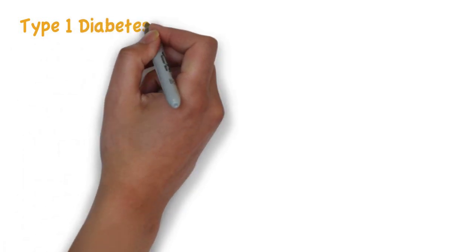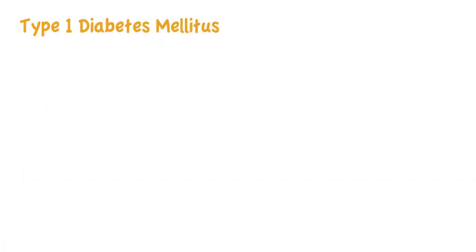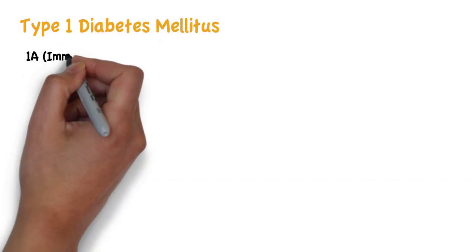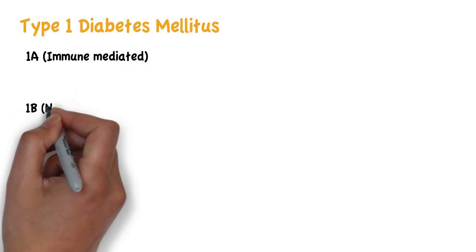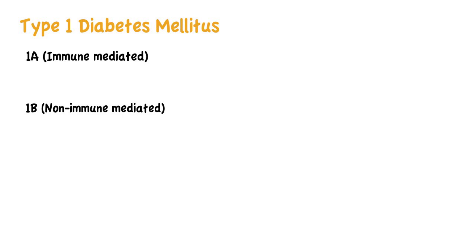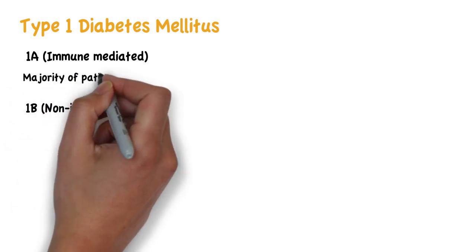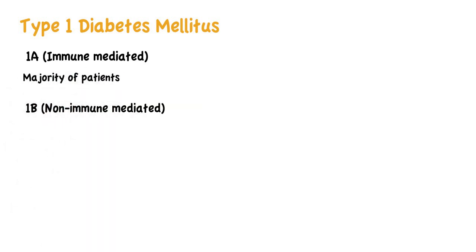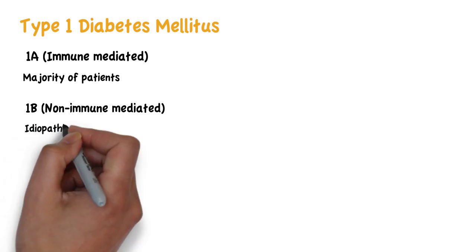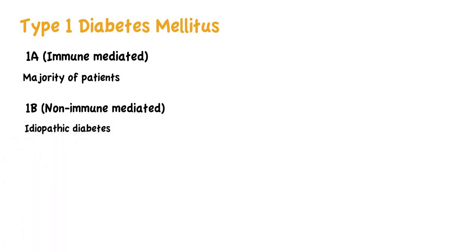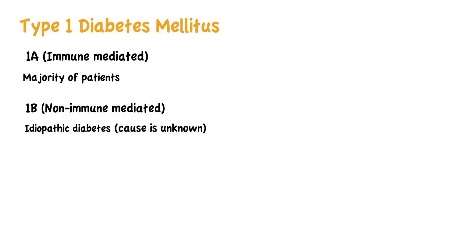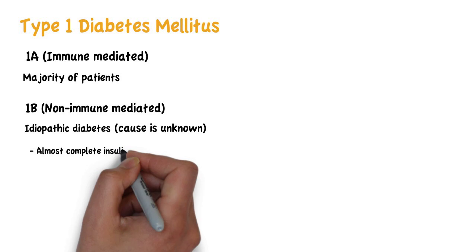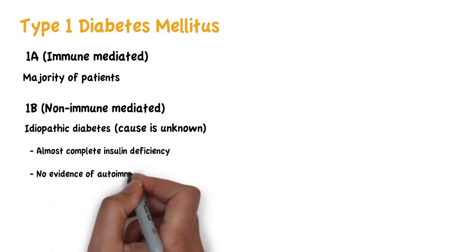Type 1 diabetes mellitus may be divided into type 1a, which is immune-mediated, and type 1b, which is non-immune mediated. The majority of patients with type 1 diabetes have type 1a, and type 1b is also known as idiopathic diabetes, meaning that the cause is unknown, and it presents with almost complete insulin deficiency with no evidence of autoimmunity.